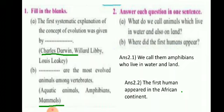First, fill in the blanks. The first systematic explanation of the concept of evolution was given by — answer is Charles Darwin. Second, dash are the most evolved animal among the vertebrates — answer is mammals.